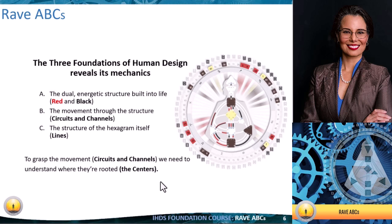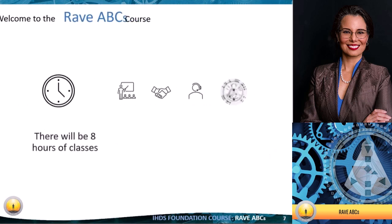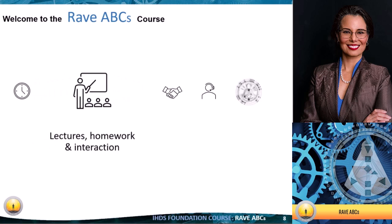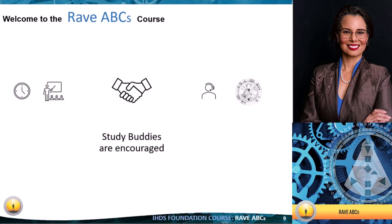To grasp the movement of circuits and channels we also need to understand where they're coming from — the centers. You should have a basis of understanding of centers from your Living Your Design awakening experience, and we're going to reinforce type, strategy, and authority in this class. Although we won't have a specific class on it, we will talk about channel nature from a type perspective. This IHGS foundation course will have approximately eight hours of classes with lectures, homework, and interaction.